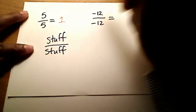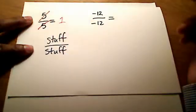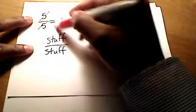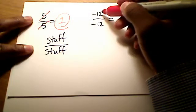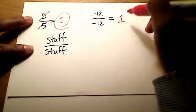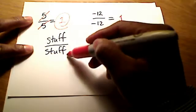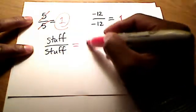So 5 over 5, we say sometimes we say that they cancel each other out, but it turns into a 1. Even if you had negative 12 over negative 12, it's just a 1. Any type of stuff over stuff is exactly a 1.